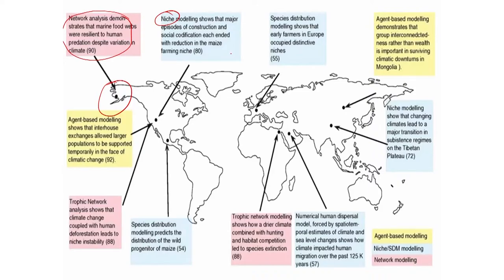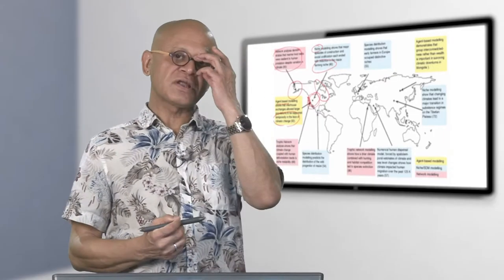Niche modeling shows that major episodes of construction and social codification each ended with reductions in maize farming — for example in the dry western US. Agent-based modeling treats human beings and climate as separate agents with interactions. Such modeling shows that inter-household exchanges allowed larger populations to be supported temporarily in the face of climate change — information that comes not from climate models alone, but from integrating climate output with human behavioral models.